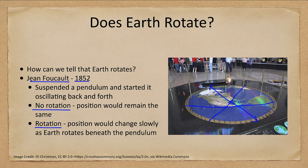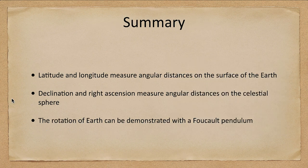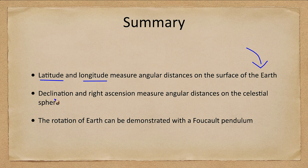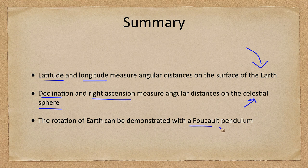Let's finish up with a summary of what we've looked at today. We talked about latitude and longitude on Earth — ways to measure angular distances on the surface. Declination and right ascension are the corresponding ways to measure position on the celestial sphere. And we looked at the rotation of Earth and how it can be demonstrated with a Foucault pendulum.